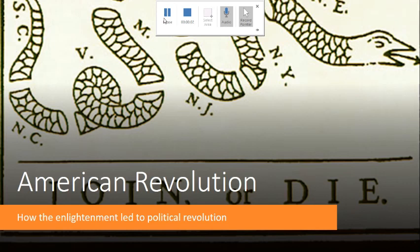Today we're going to begin seeing some of the consequences of Enlightenment thought by looking at the American Revolution. During the Enlightenment, thinkers came up with new ways of thinking about government, teaching that if governments are not protecting people's rights, those people can rebel and set up a new government. The first place where we see this is in the American Revolution, which will birth the United States of America.